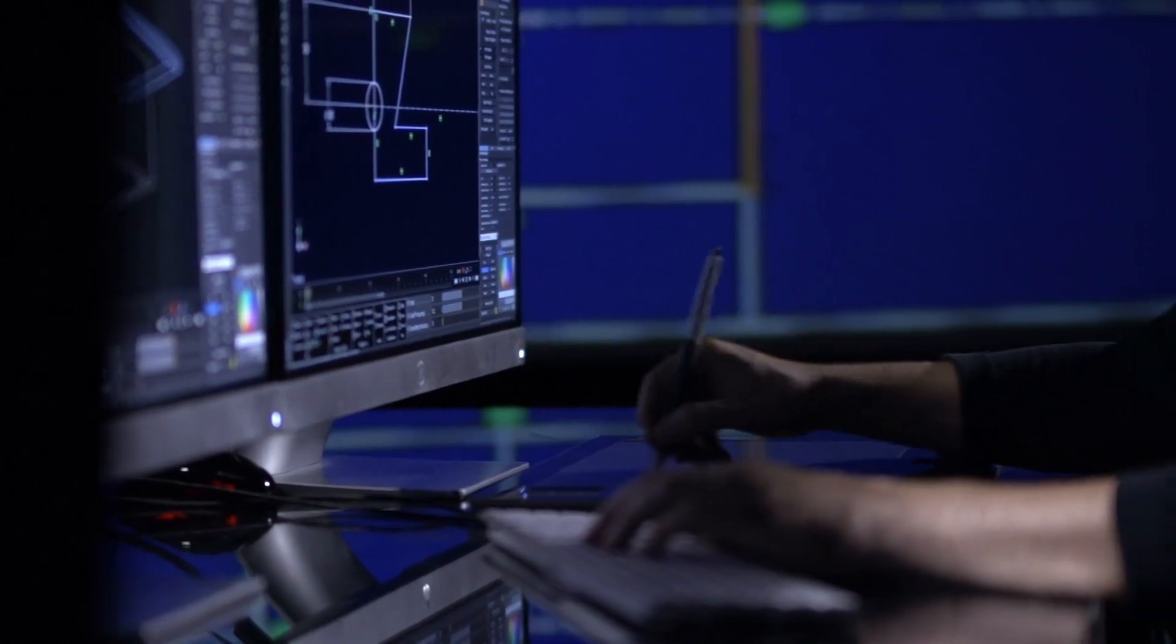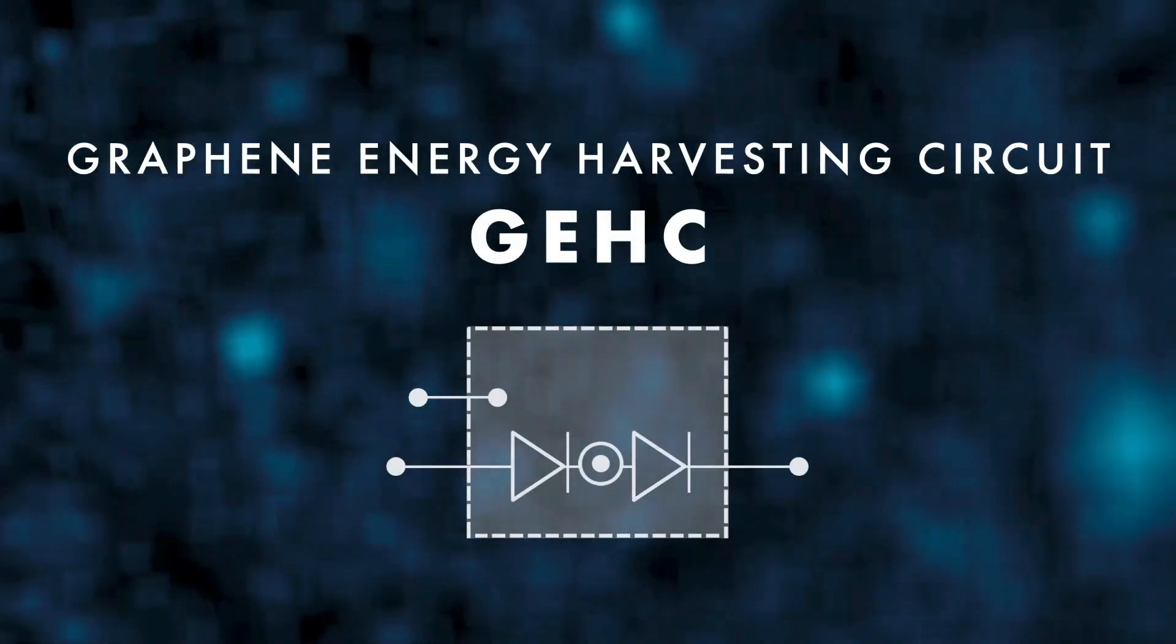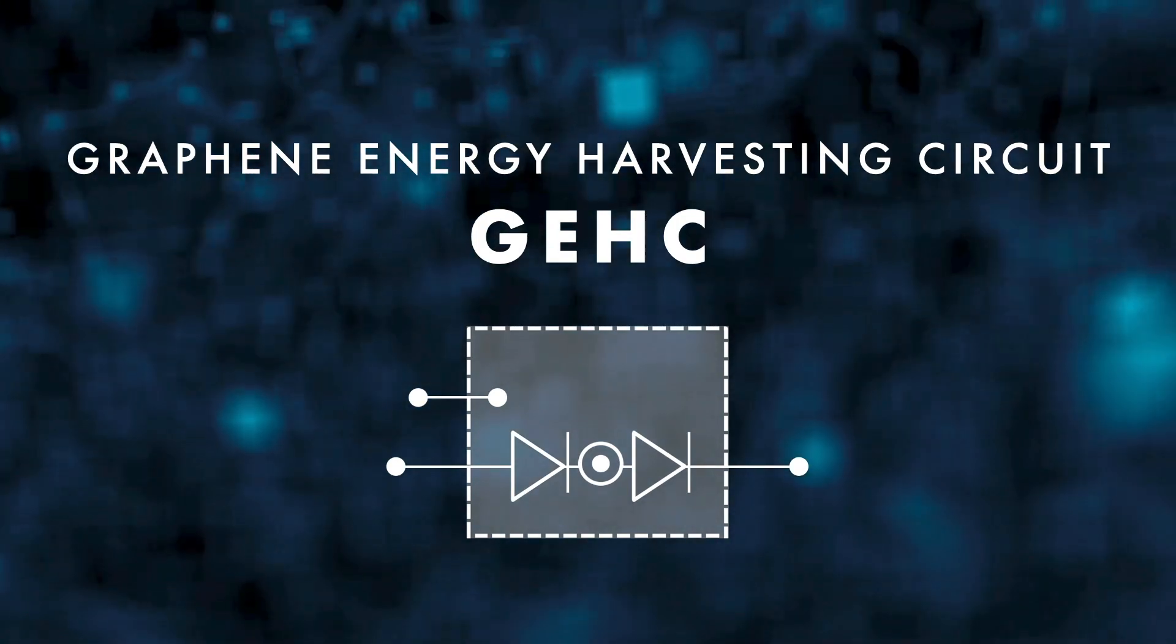The graphene membrane is connected to a proprietary harvesting circuit known as the GEHC. This circuit converts the membrane's movements into electric current.